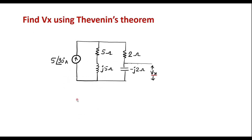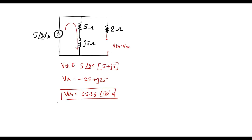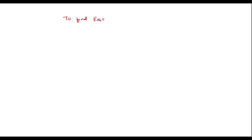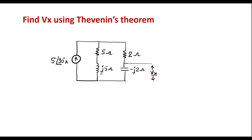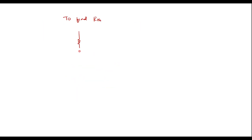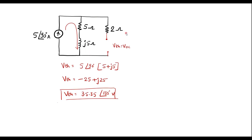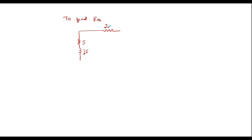Now to calculate Rth, we have to open the φ∠90° current source. Drawing the equivalent circuit to find Rth: with the current source opened, φ+J5 comes in series with the 2 ohm resistor. So we have the 2 ohm resistor in series, and Rth is the resistance between the two open terminals. Therefore, Rth equals 7 + J5 — all impedances are in series.